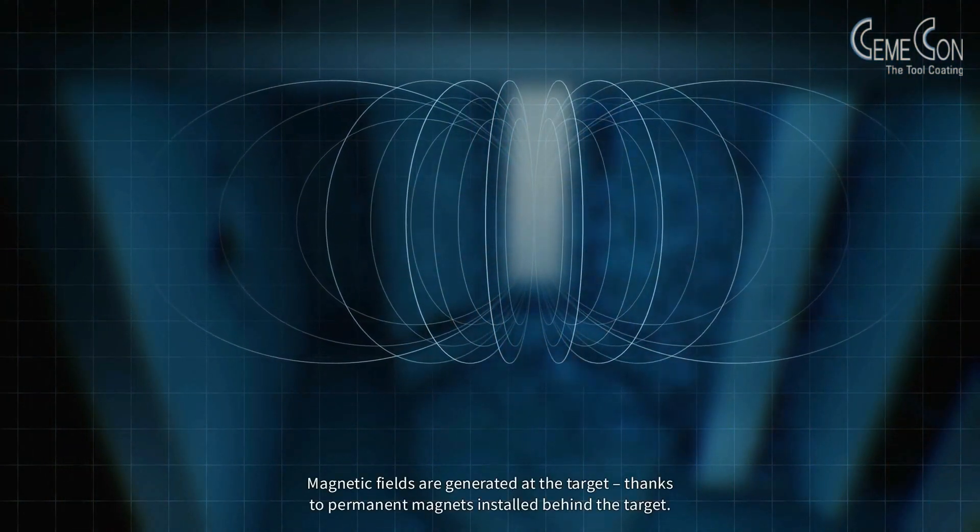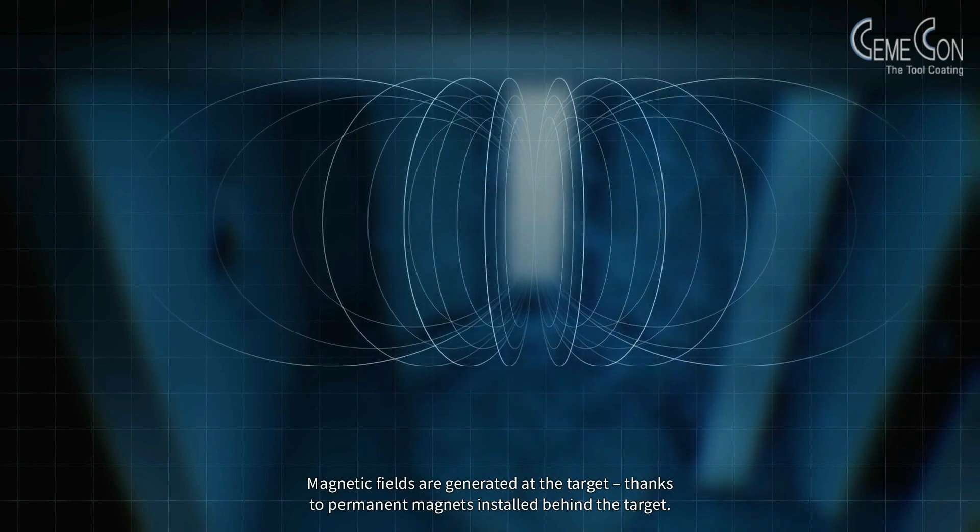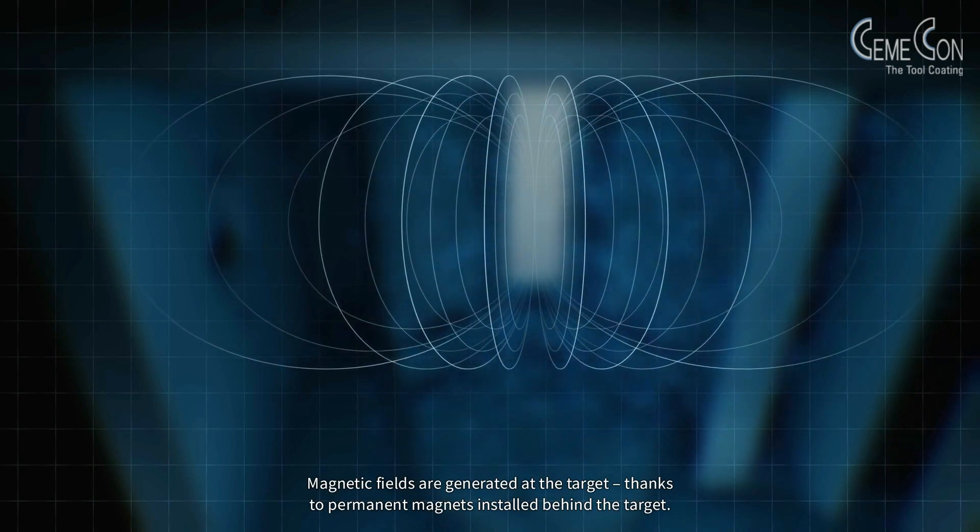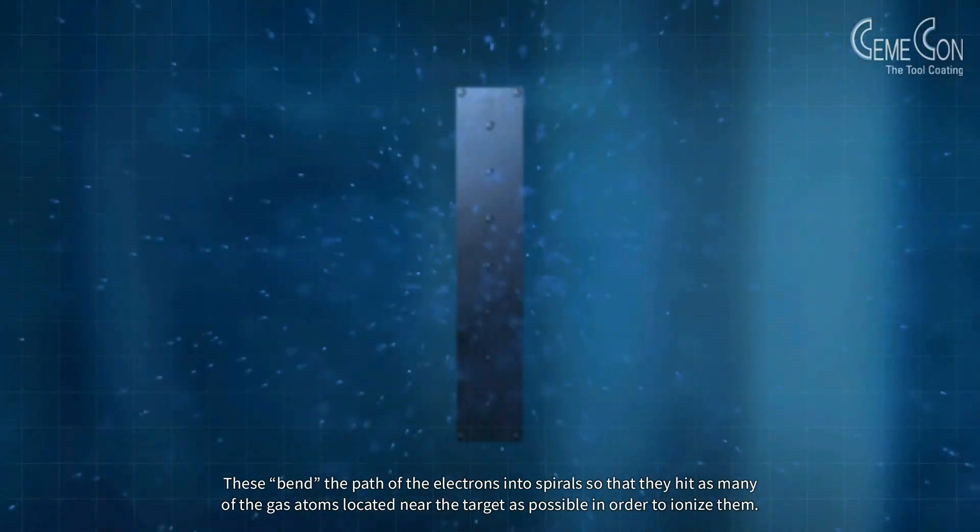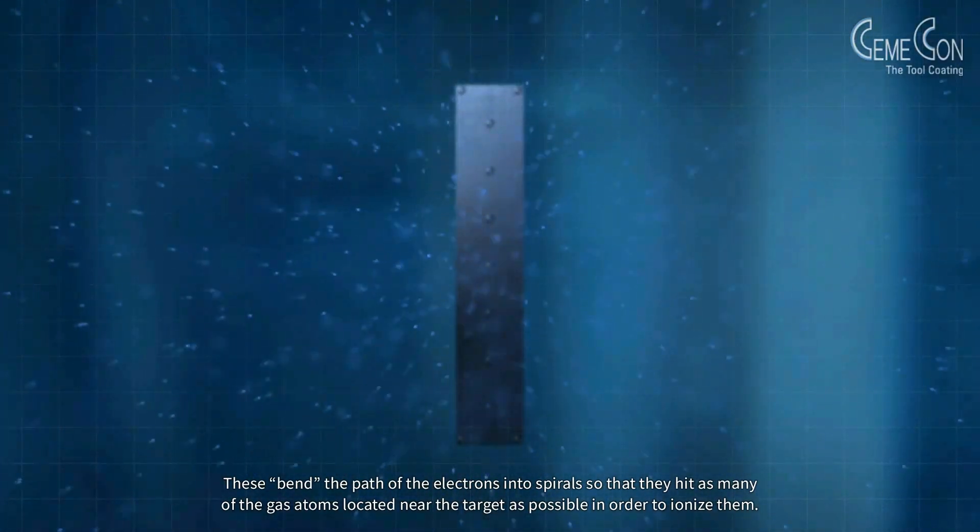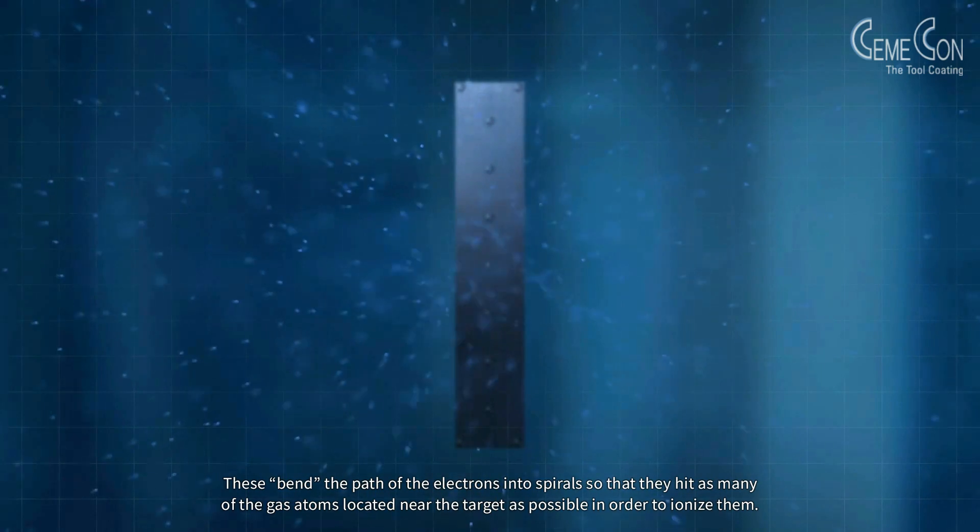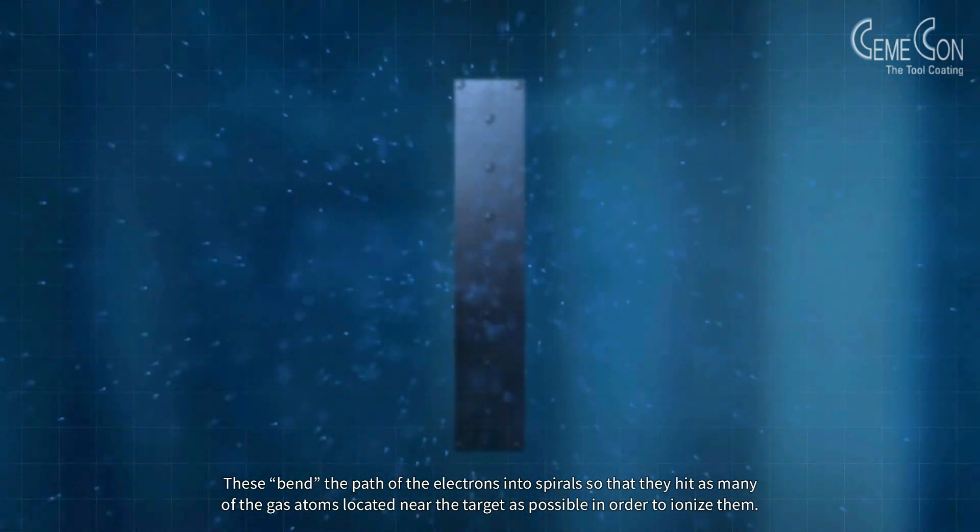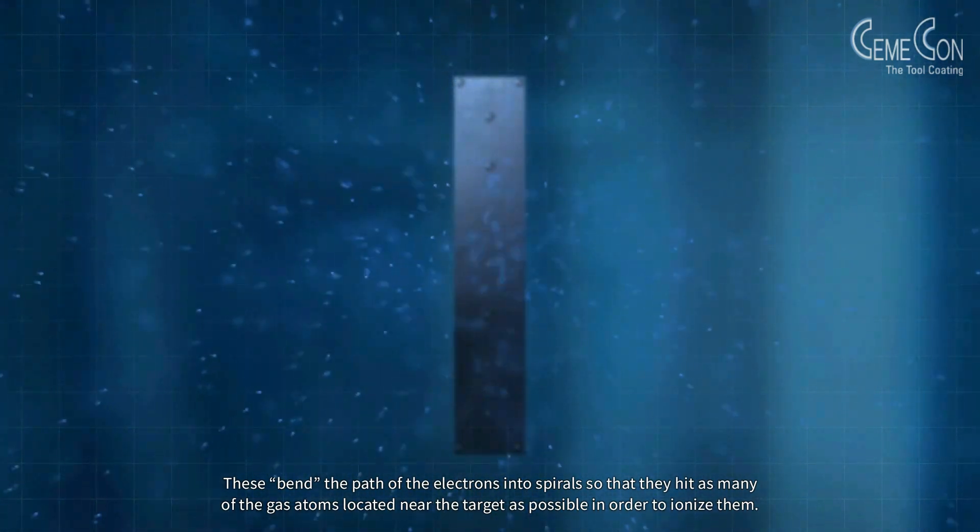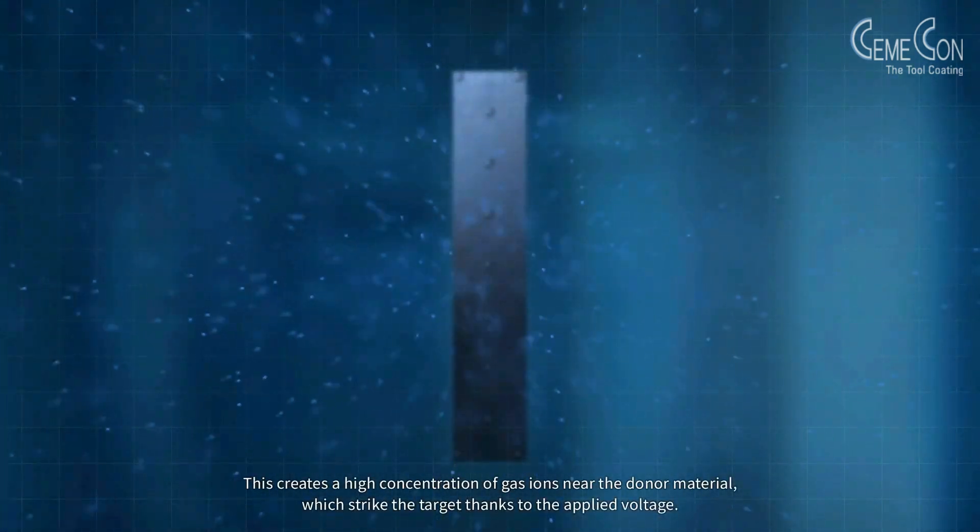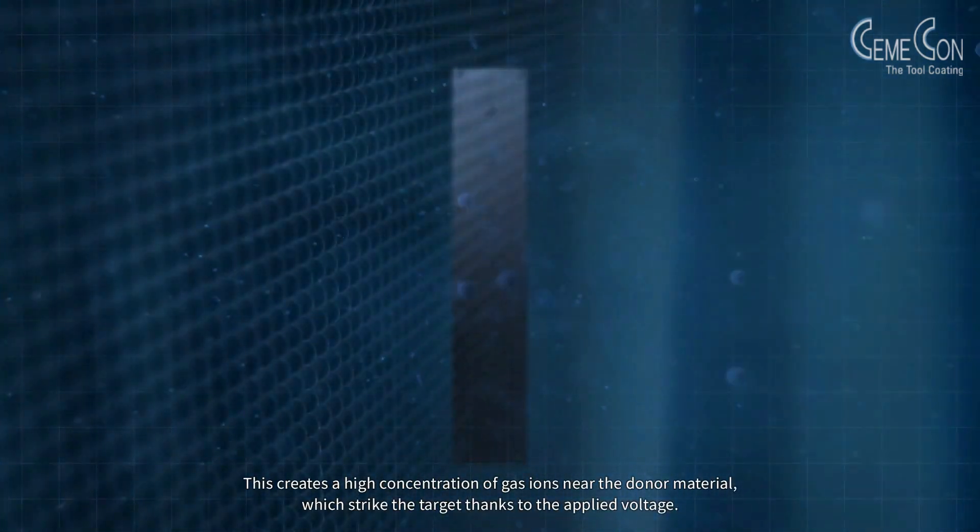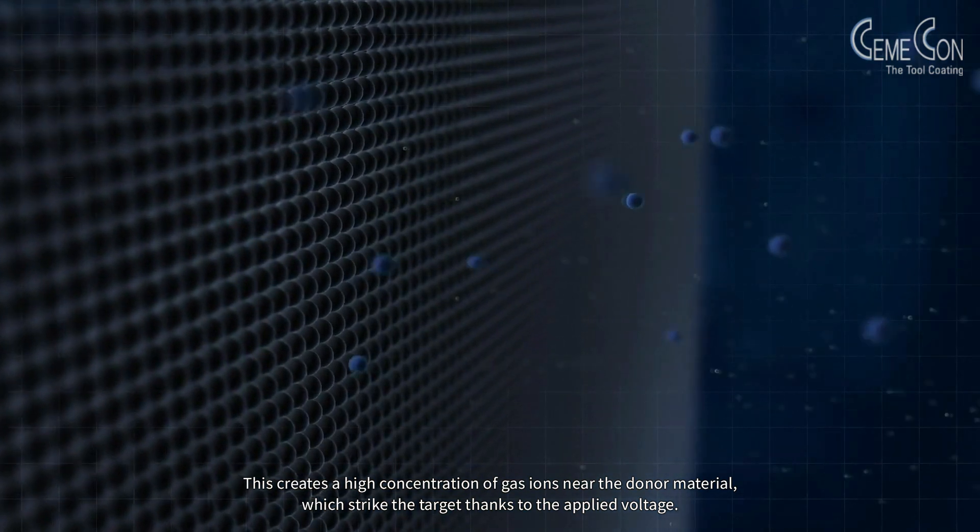Magnetic fields are generated at the target thanks to permanent magnets installed behind the target. These bend the path of the electrons into spirals so that they hit as many of the gas atoms located near the target as possible in order to ionize them. This creates a high concentration of gas ions near the donor material which strike the target thanks to the applied voltage.